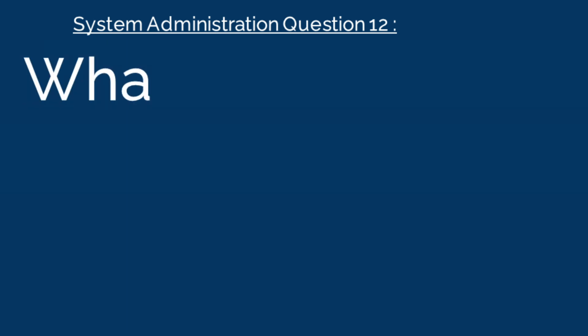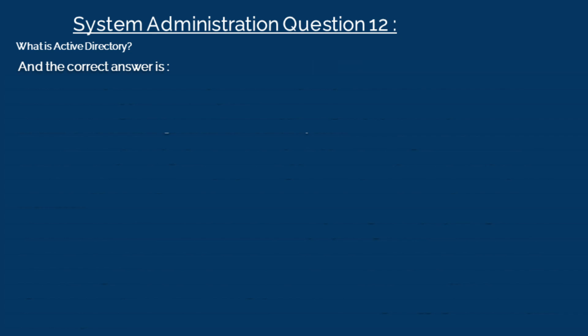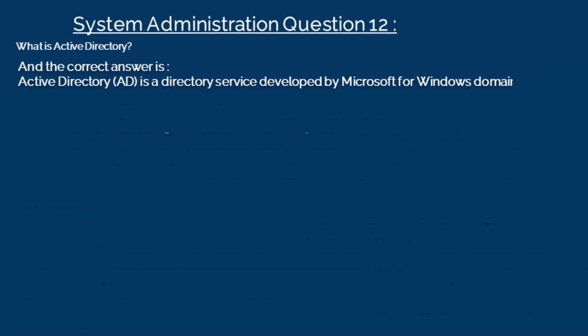Question 12. What is Active Directory? The correct answer is: Active Directory (AD) is a directory service developed by Microsoft for Windows Domain Networks. It's a key part of an enterprise IT infrastructure.